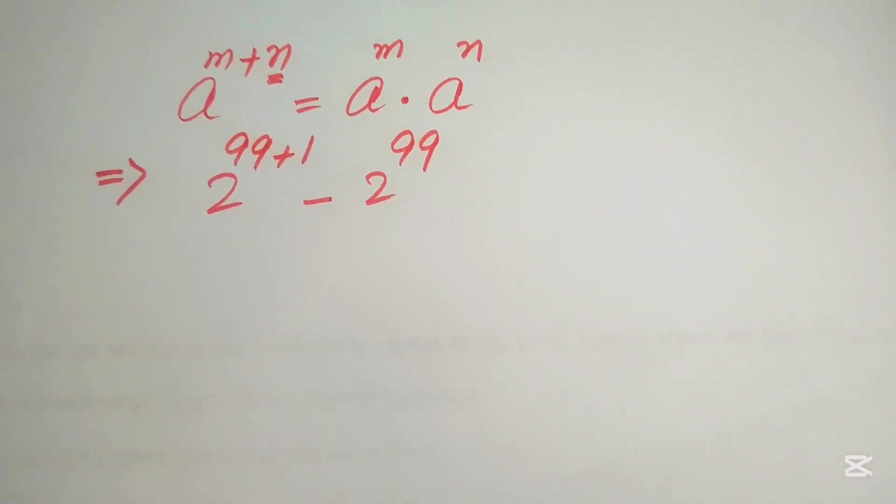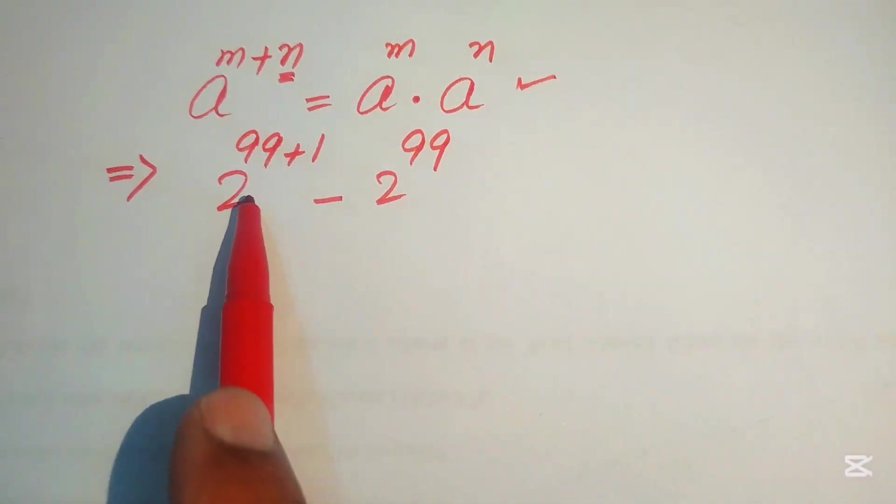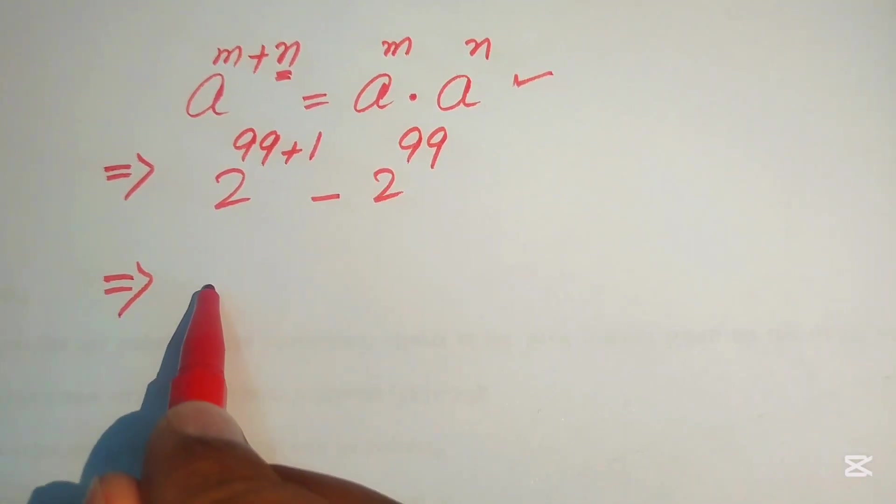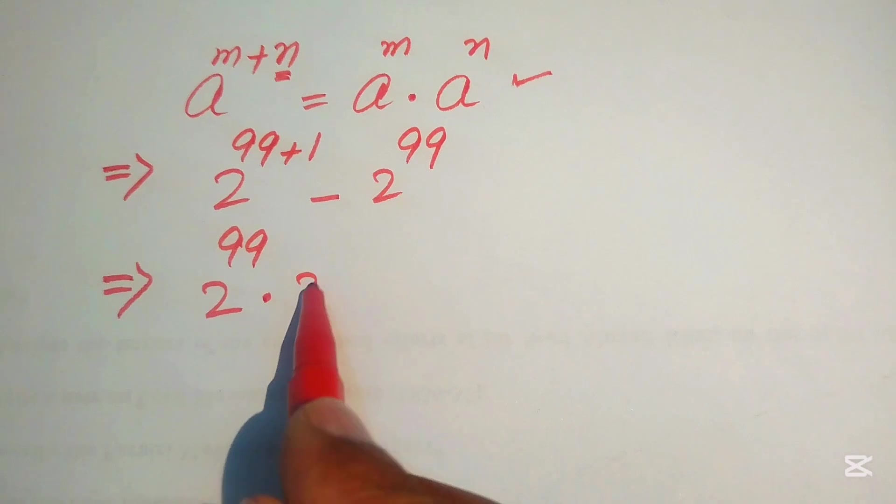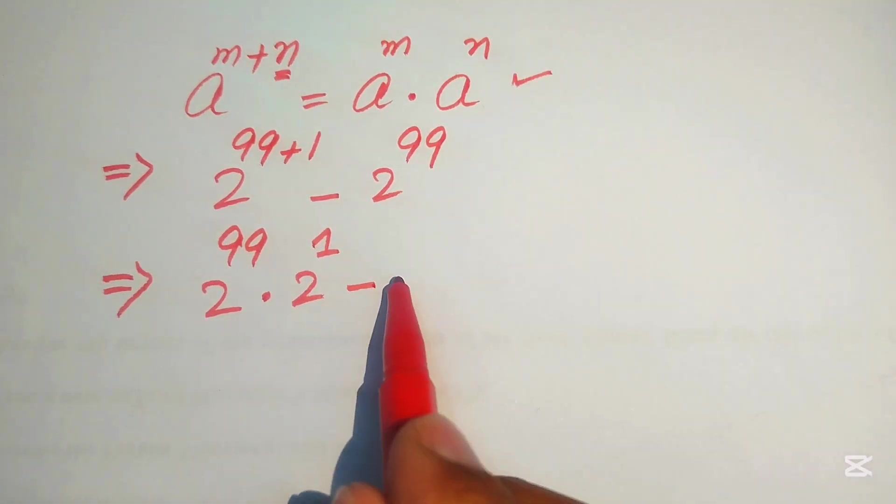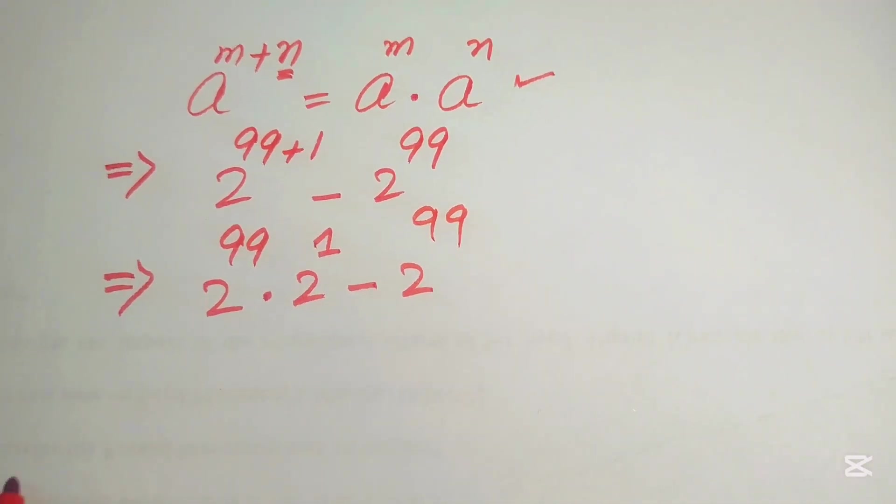Now after this step, we apply this rule in the first term so that our first term will be written as 2 to the power of 99 multiplied by 2 to the power of 1, and minus we have 2 to the power of 99.